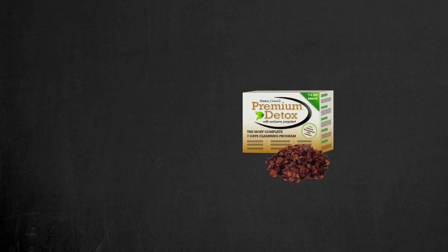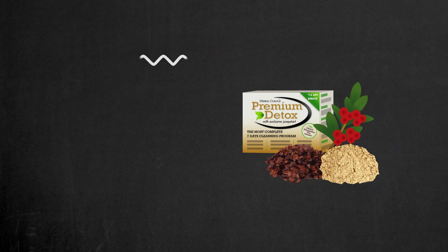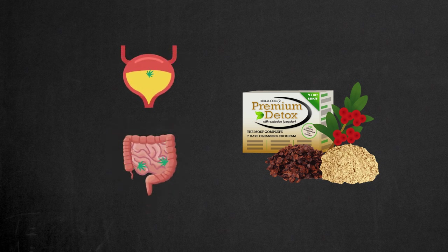Cascara sagrada bark, uva ursi, slippery elm bark. These will speed up the excretion of metabolites via stool and urine.